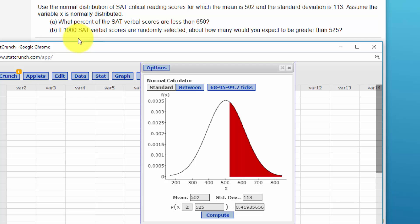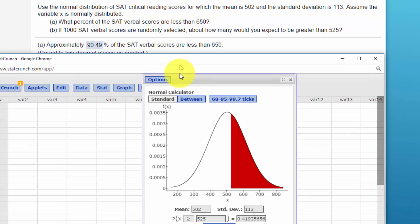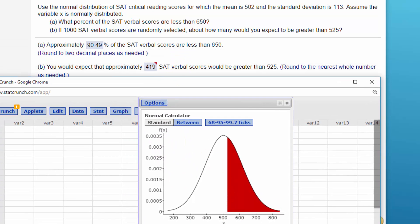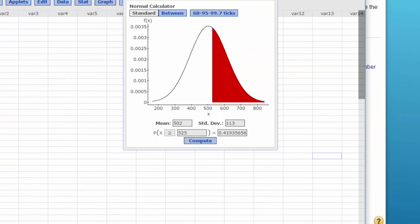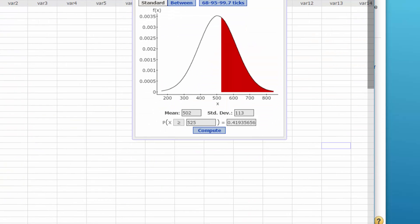And if they gave you something different than 1000, just use your little calculator to multiply that 0.419 times one of that value. And I'm pretty sure 419 is the answer to that. So that's how you can use this calculator very quickly to solve these problems.